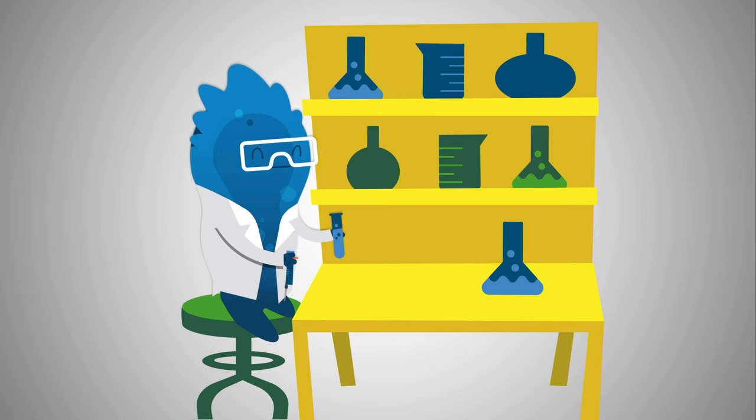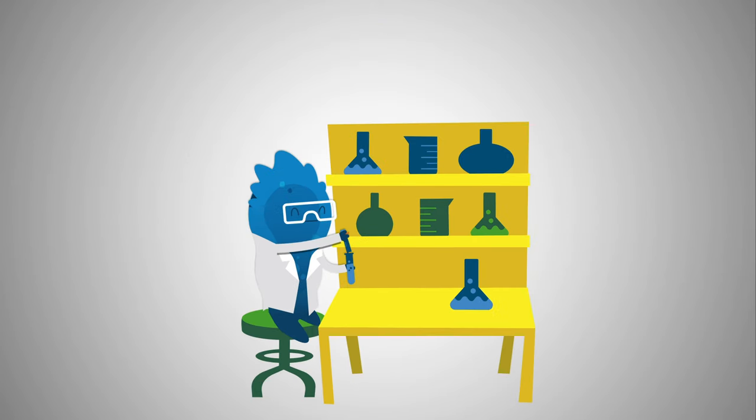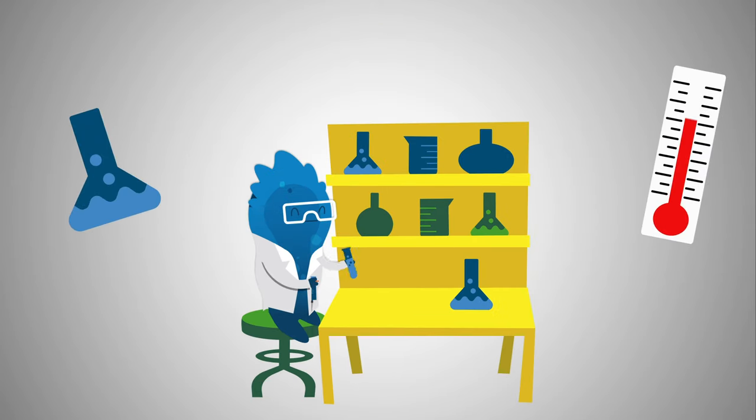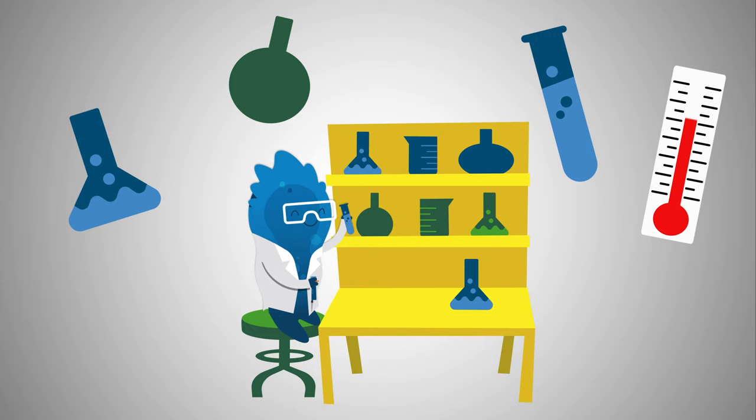Lab conditions can also affect copy number. Aeration, temperature, culture volume, antibiotic, and medium all have their own effect on plasmid replication.